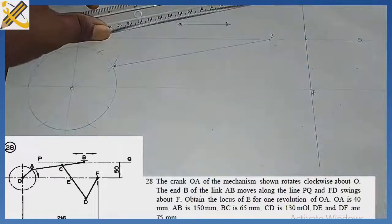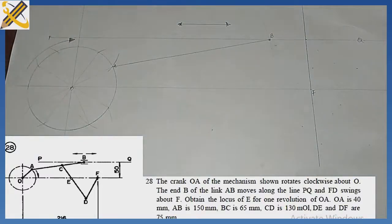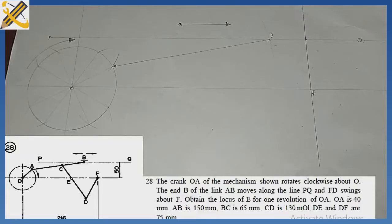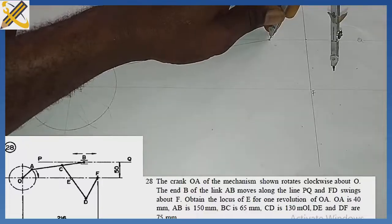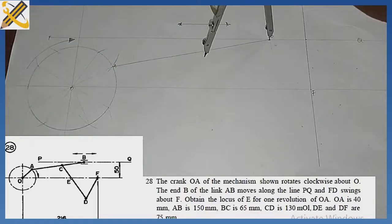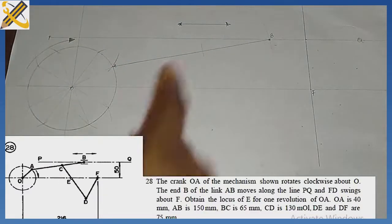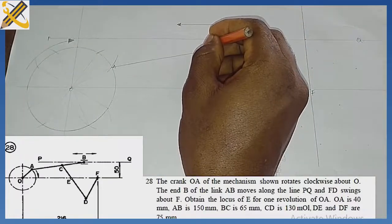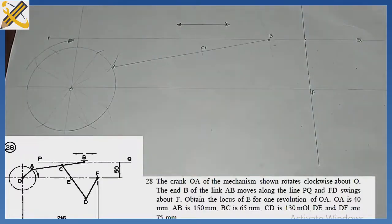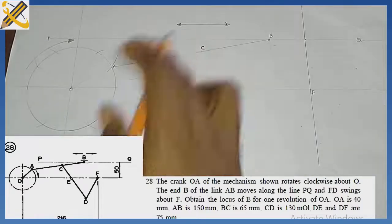Ensure you make use of a chain line — don't make it too thick, so as not to confuse yourself along the way. We are told that point B to C is 65. With radius 65 on your compass, place it on point B and strike an arc. Wherever the arc touches this line is your point C.